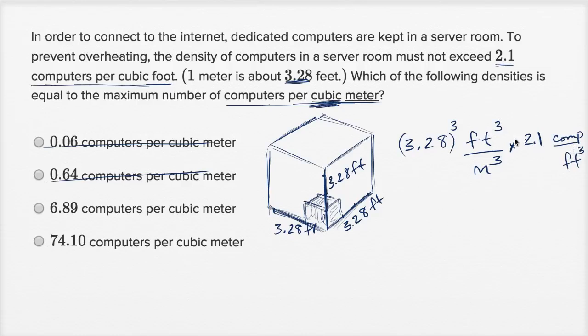And you can see that these units are going to work out. You have cubic feet divided by cubic feet. And if you multiply, you're going to get 3.28 to the third power times 2.1, that's this, times this, computers per meters cubed, or per cubic meter. So this is the maximum number of computers per cubic meter, right over here.